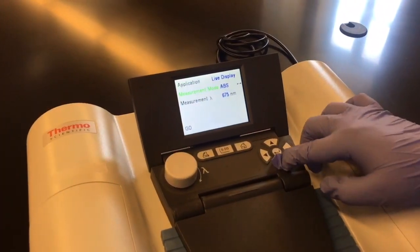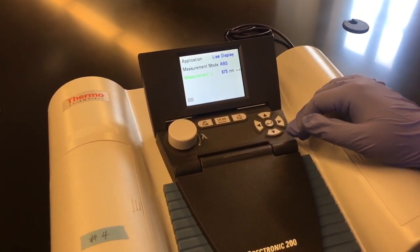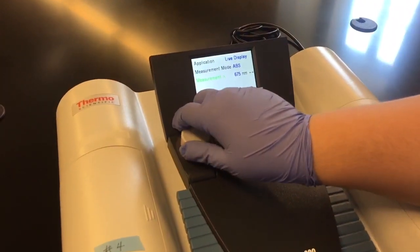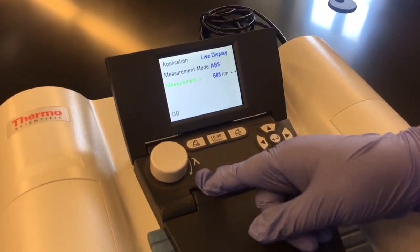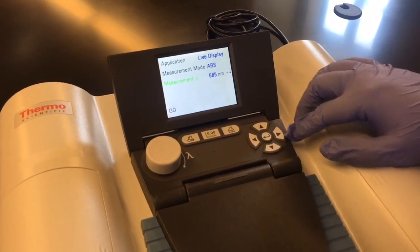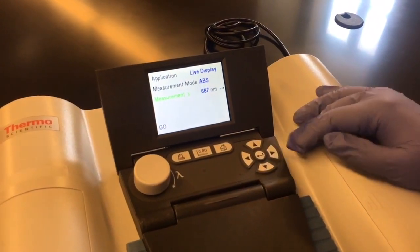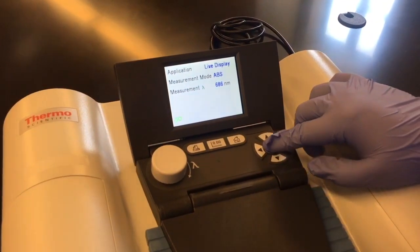This is where you can select the measurement of your wavelengths, and it depends on what your professor asks you. But for our example, we're going to set it to 686. You can use this knob to adjust the length by bigger intervals, but if you want to get more specific, you can use the keypad. I want to set mine to 686, then press down and go to go.